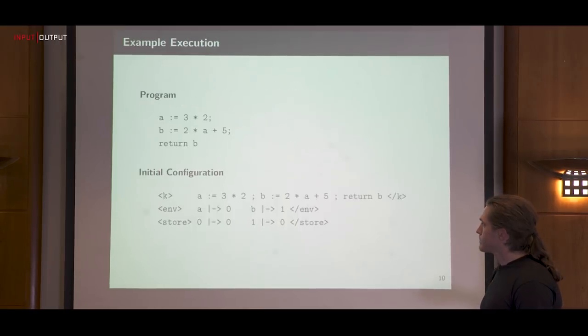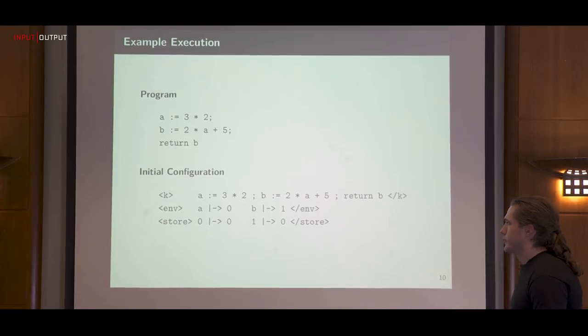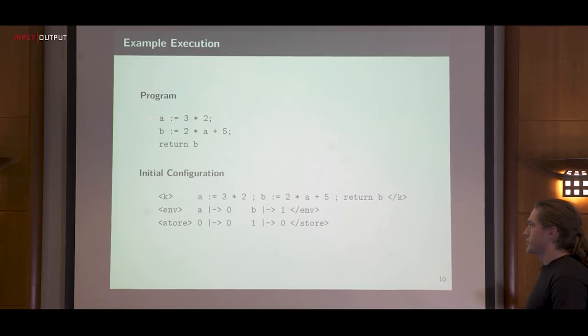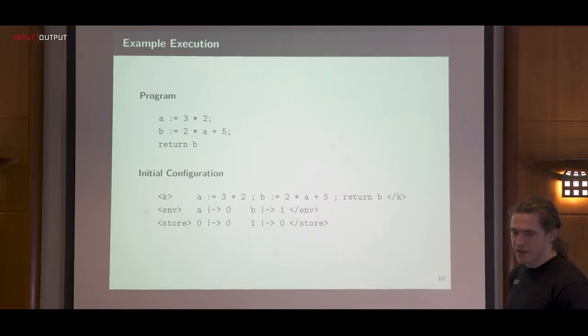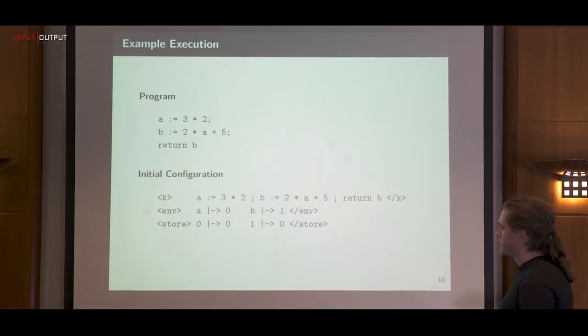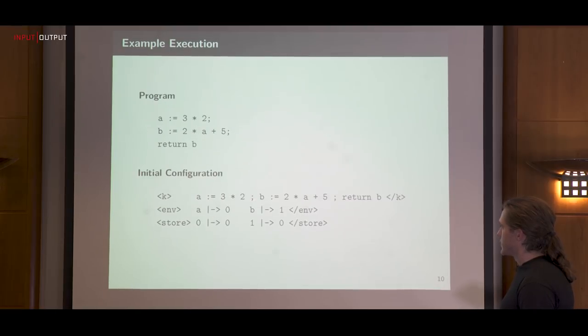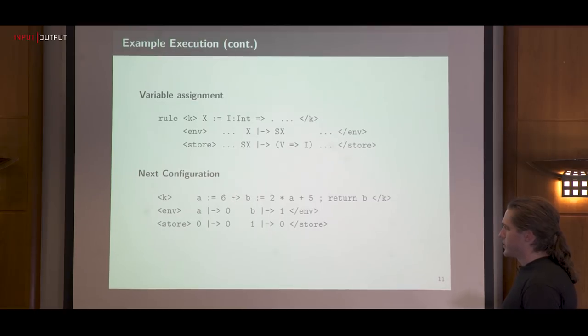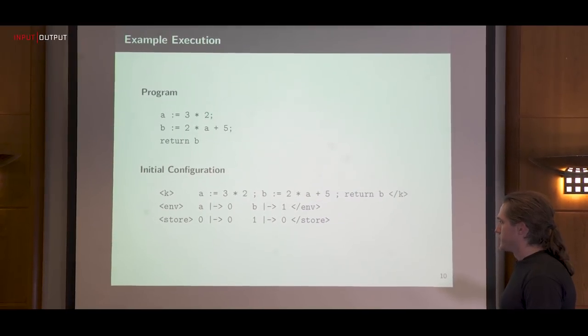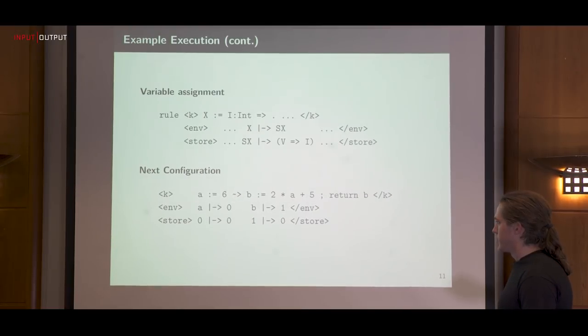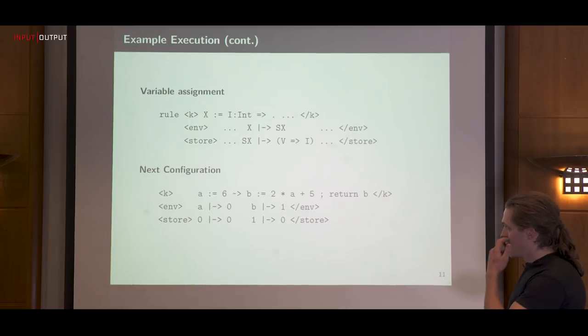I'm going to walk through an example execution to drive this home. Here's our program: A equals three times two, B equals two times A plus five, return B. Here is our initial configuration where A is pointing at store location zero which is initially value zero, B is pointing at store location one which is initially value zero. Here's the entire program. The first thing that's going to happen is we're going to take this semicolon and turn it into this squiggly arrow which means followed by in K.